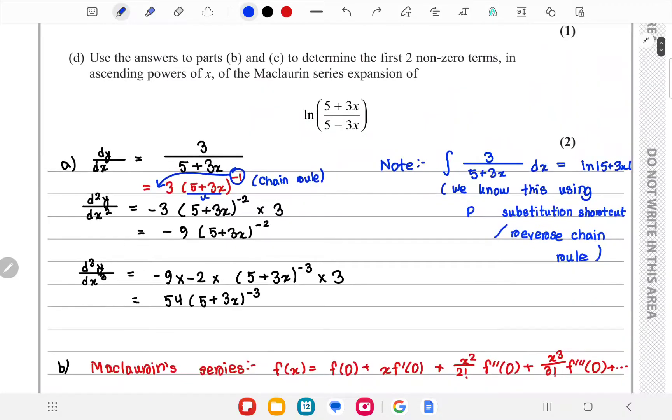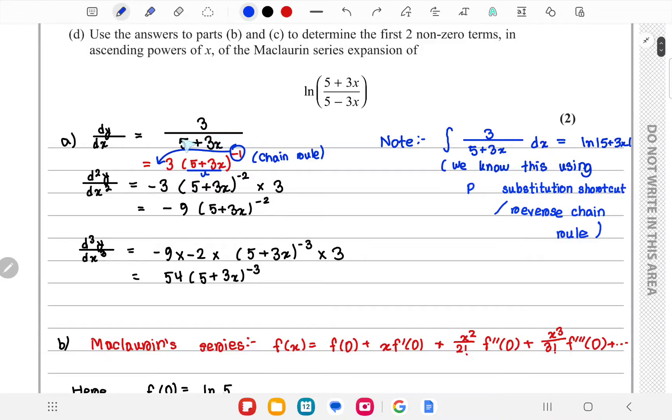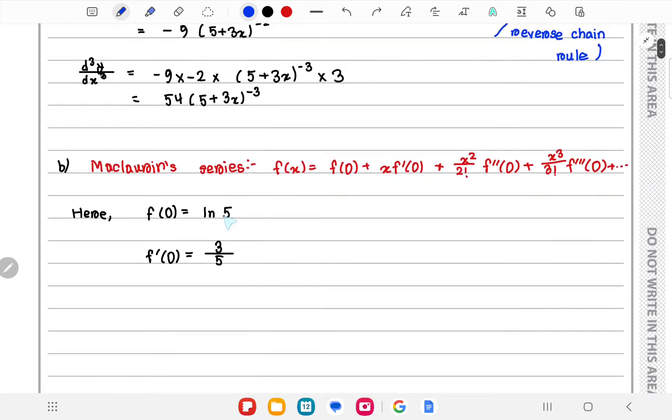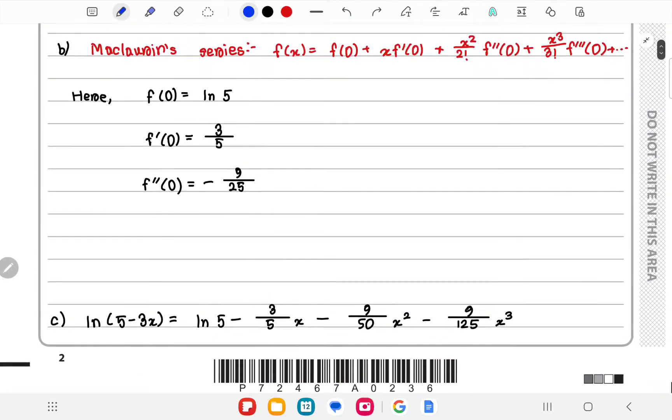Now f'(0) would be putting 0 in this equation of dy/dx. You will get 3/5. Now for f''(x), we'll have to put 0 in this equation, so you'll get -9/5², which would be -9/25.